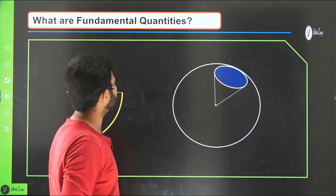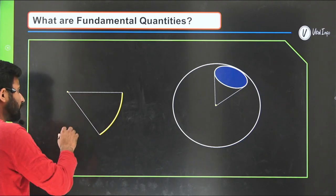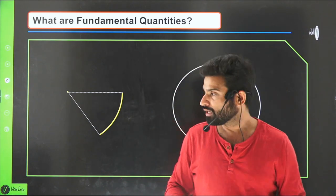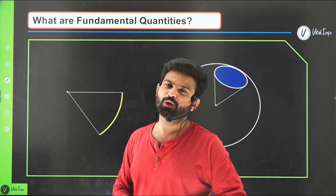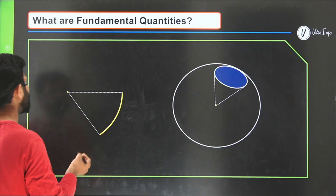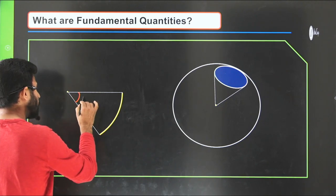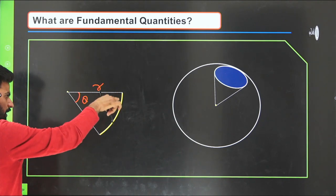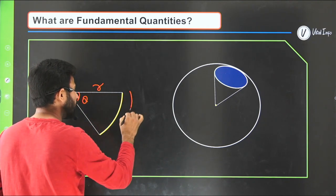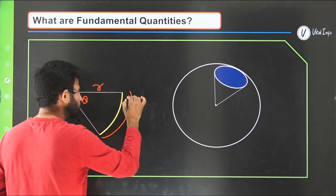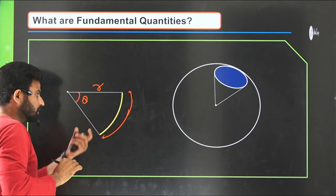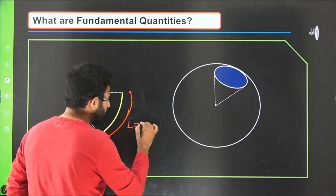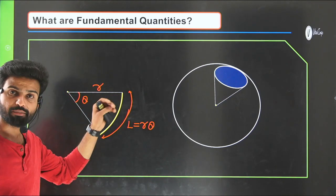For the plane angle, we use the symbol radian. When we talk about two-dimensional angles, we consider the plane angle — just like a circle. The circle represents your plane angle, and the angle is denoted by theta. The arc length L of a segment is given by L equals R times theta, where R is the radius.